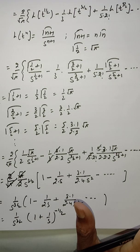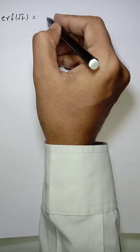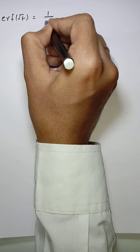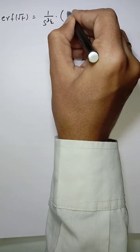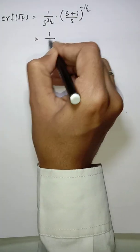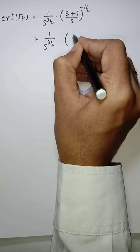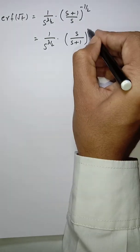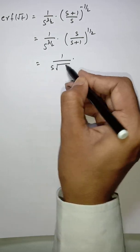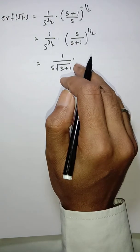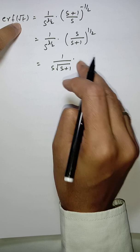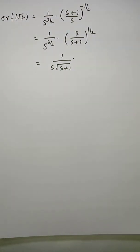You can pause the video and write down the steps. This implies the Laplace transform of erf(√t) equals (1/s^(3/2)) × (s/(s+1))^(1/2) = 1/(s·√(s+1)). This is the Laplace transform of the error function erf(√t).